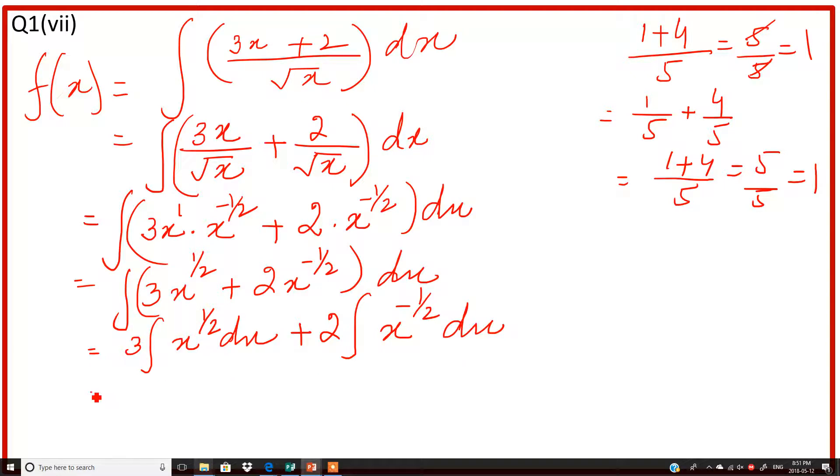Now we're going to remove the integral sign by adding 1 to the exponent. Exponent is 1 over 2, we add 1, our new exponent will be 1 over 2 plus 1. Same thing, negative 1 over 2 is the exponent, we add 1, new power is positive 1 over 2.